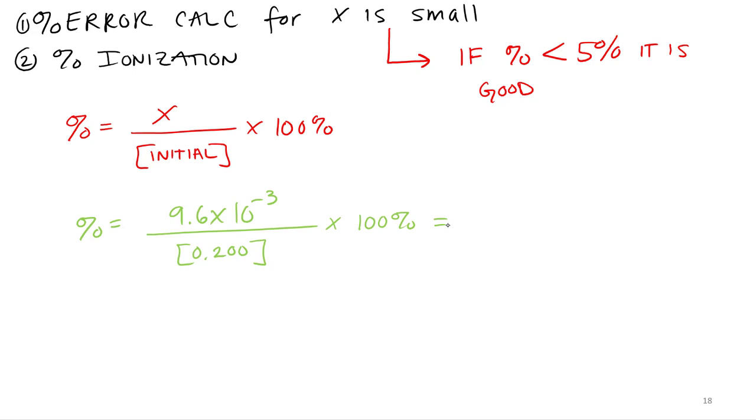Four point eight. So that's the percent ionization for this acid and it's also less than five percent. So oh hey, that's a close one, almost had to break out the quadratic. Four point eight, all right so that's what you have to do to make sure it's a good approximation.